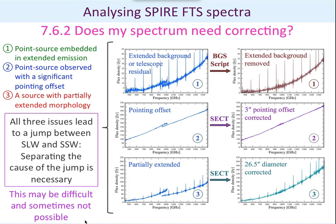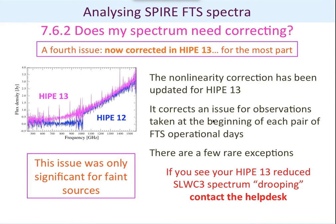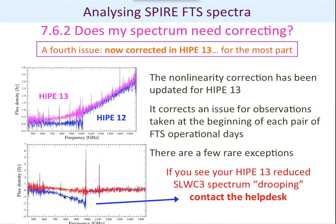We're going to look at an example for each of these situations. There's also a fourth issue I've already brought up briefly: the non-linearity update, which corrects particularly observations that were taken in the beginning of operations and around cool recycles. You should now find that the fitting gives a nice smooth section, whereas in HIPE 12 the SLW was drooping. We have found there are a few rare exceptions around OD 500, and you may find SLW is still drooping. If you see this, contact the helpdesk.